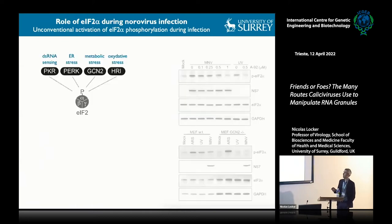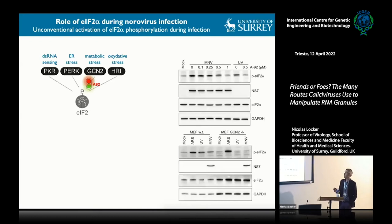We dug deeper into the kinase responsible for EIF2-alpha phosphorylation, knowing that PERK and PKR are normally responsible during infection. The end result is that it's another kinase, GCN2, that is driving EIF2-alpha phosphorylation. We inferred this from the fact that using a specific GCN2 inhibitor, A92, we can revert EIF2-alpha phosphorylation in a dose-dependent manner, and in GCN2 knockout cells infected with MNV, we lose EIF2-alpha phosphorylation entirely.